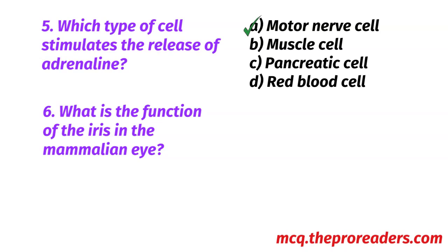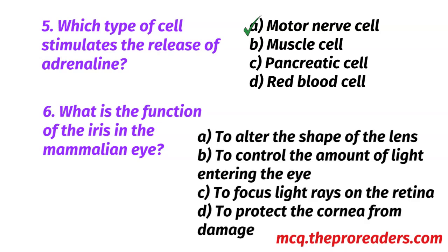What is the function of the iris in the mammalian eye? A. To alter the shape of the lens. B. To control the amount of light entering the eye. C. To focus light rays on the retina. D. To protect the cornea from damage. Option B, to control the amount of light entering the eye, is the correct answer.